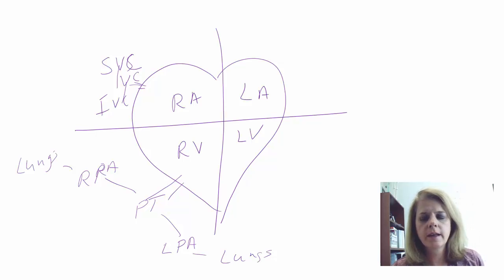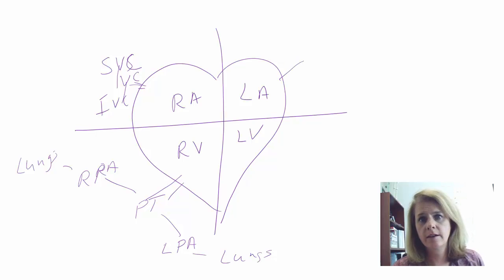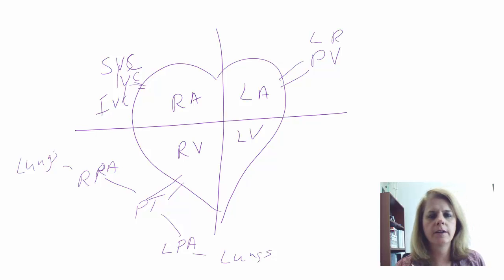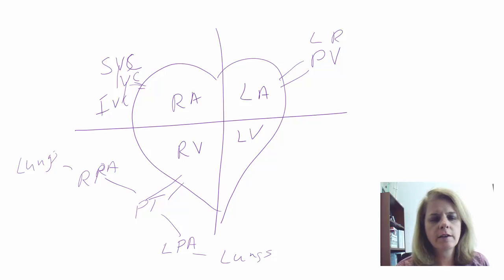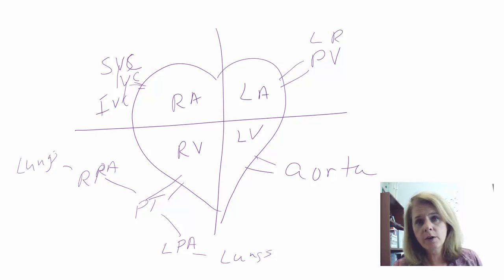Blood has to come back to the left side of the heart through the pulmonary veins — left and right depending on which lung the blood went to. Then blood leaves the heart and goes out to the body through the aorta. Those are the major vessels: the vena cava, pulmonary trunk dividing into pulmonary arteries, pulmonary veins bringing blood back, and the aorta.